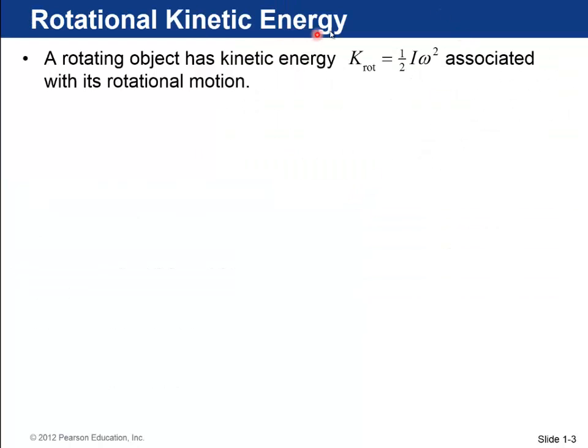Okay, so rotational kinetic energy. If something's rotating, it has this rotational kinetic energy, one-half I omega squared. I is the rotational inertia, which we discussed in the last video, and omega is the angular velocity or angular speed.